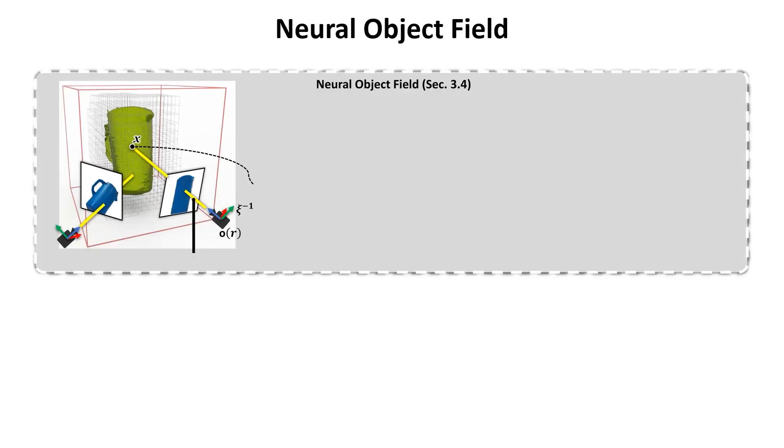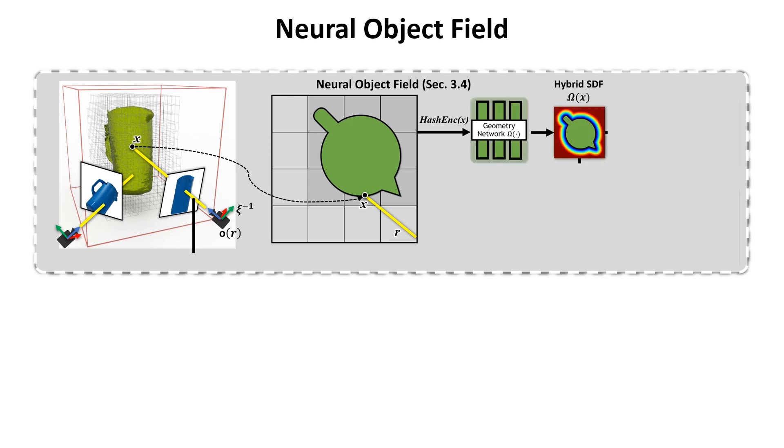For the neural object field, we take all frames from the memory pool and their previously estimated poses. We construct an octree based on the merged point cloud and sample only the occupied regions along the ray. For position encoding, we look up the multi-resolution hash encoding for the sampled point. We use a geometry network to learn a mapping to the SDF values. Later on, the object mesh can be extracted from the signed distance field using marching cubes.